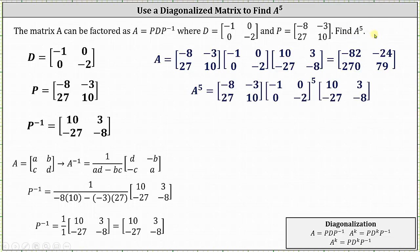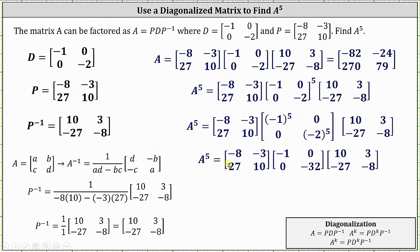And now we can find A to the fifth by determining P times D to the fifth times P inverse. The next step is to find the fifth power of the diagonal matrix. Because matrix D is a diagonal matrix, we can determine the fifth power of the matrix by raising the entries along the main diagonal to the fifth power. The fifth power of negative one is negative one, and the fifth power of negative two is negative 32. And now we can find A to the fifth by determining the product of these three two by two matrices.